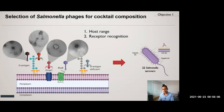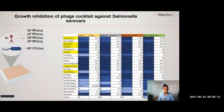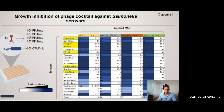We tested the efficacy of this phage cocktail against 22 different Salmonella serovars. We monitored growth for 24 hours when infected with different concentrations of the phage cocktail. Even at very low concentrations, we have great inhibition and coverage for most of these Salmonella serovars. As we increase the concentration, there is better inhibition — as expected, more phage concentration leads to more inhibition. Even at moderate concentrations, we have great inhibition, which is what we were looking for, and these results are very promising.